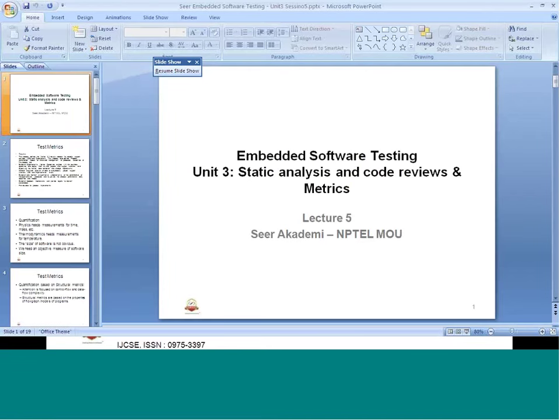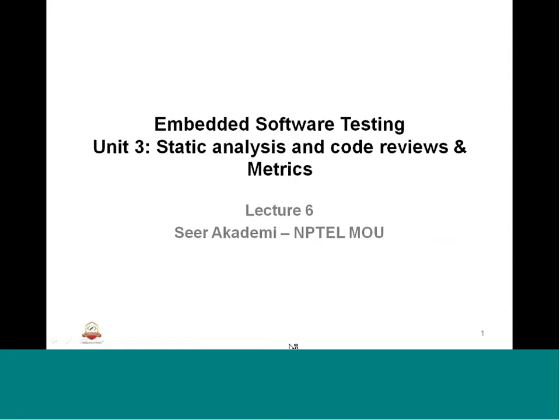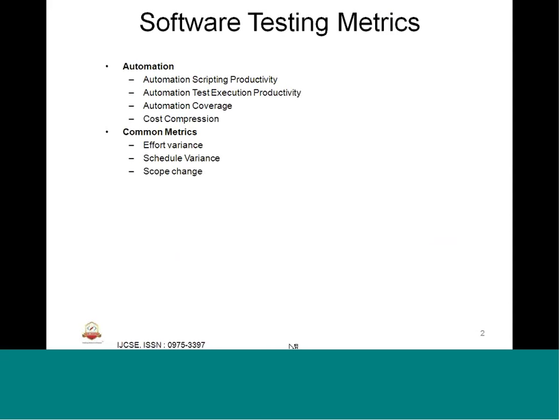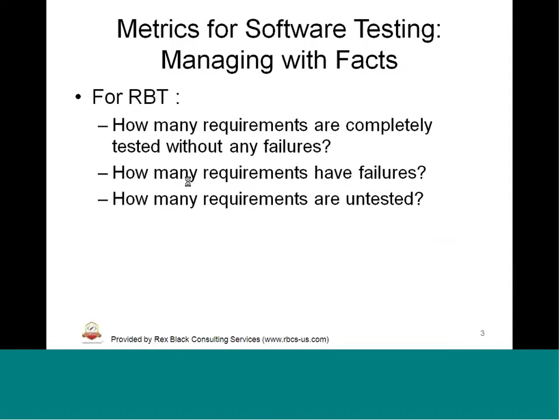That is what we studied in Lecture 5. Today we will continue on Lecture 6, which details metrics for automation: automation scripting productivity, automation test execution productivity, automation coverage, and cost compression — all this will be covered. Common metrics used include effort variance, schedule variance, and scope changes. For testing, we need to deal with the facts in terms of managing what are the facts we have considered. For generating the test matrix, for RBT — which is nothing but requirement-based testing — we need to have a matrix meticulously done in terms of reporting.